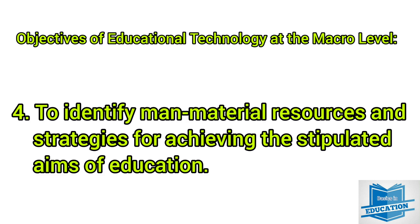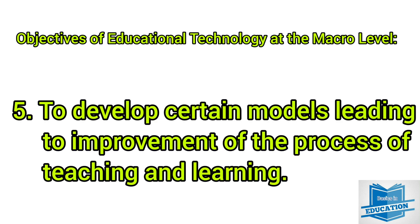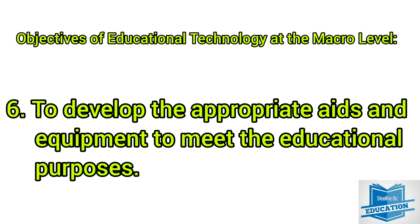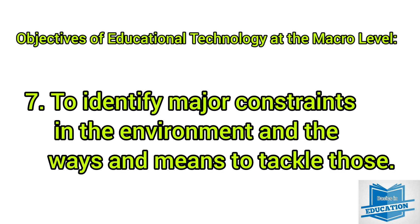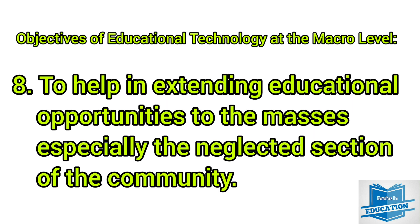Four: to identify man-material resources and strategies for achieving the stipulated aims of education. Five: to develop certain models leading to improvement of the process of teaching and learning. Six: to develop the appropriate aids and equipment to meet educational purposes. Seven: to identify major constraints in the environment and the ways and means to tackle those.